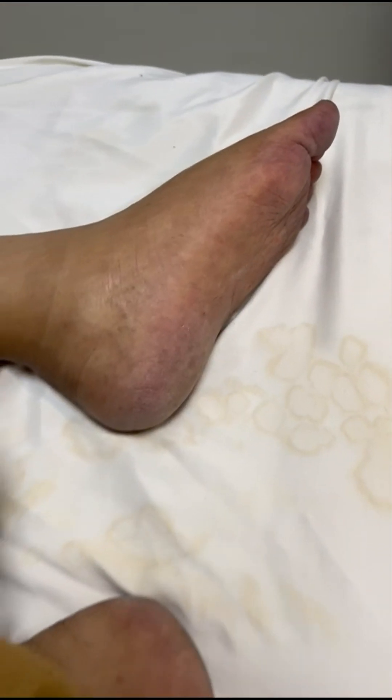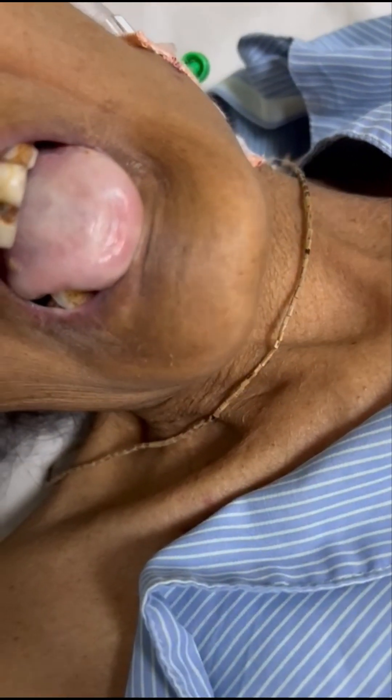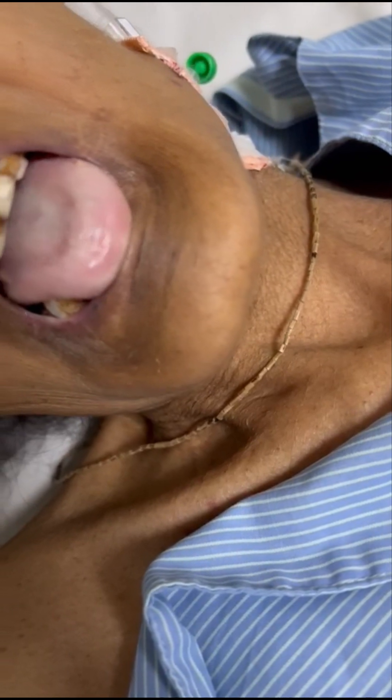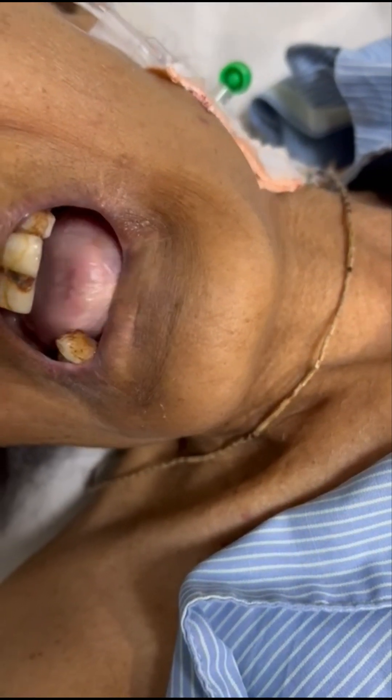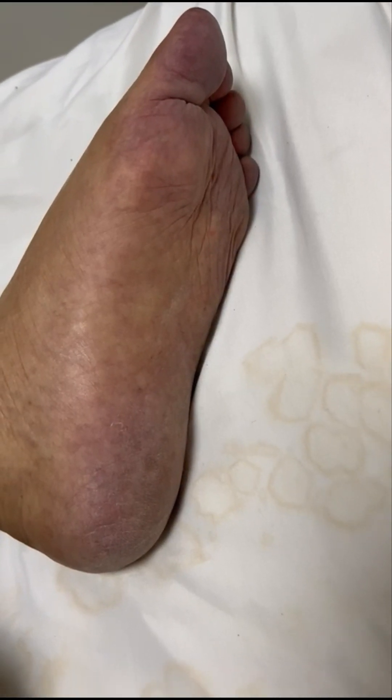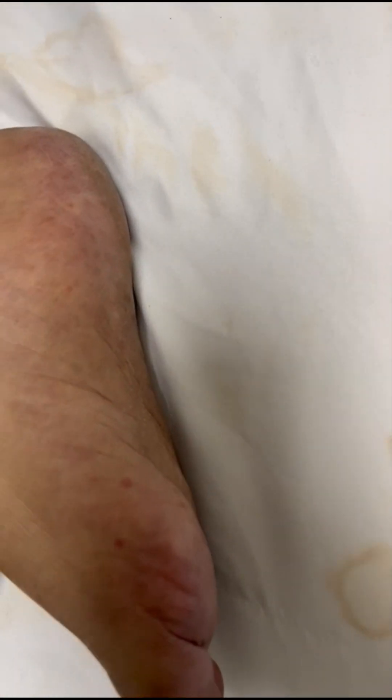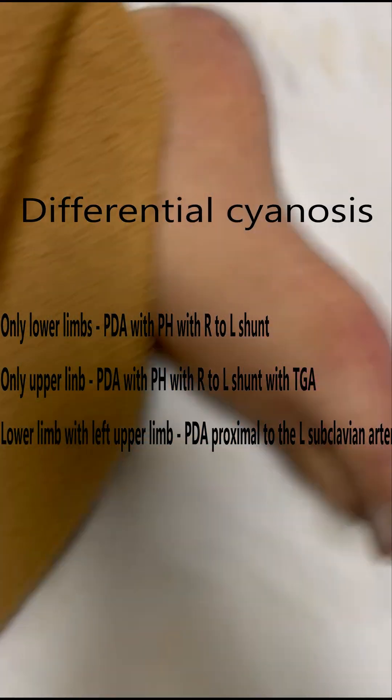Patients can also have sulfhemoglobinemia. When the concentration goes more than 0.5 grams per deciliter, it leads to central cyanosis. Similarly, smokers can have carboxyhemoglobinemia, which can also cause cyanosis.